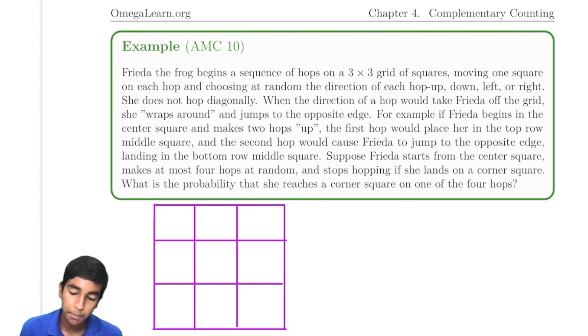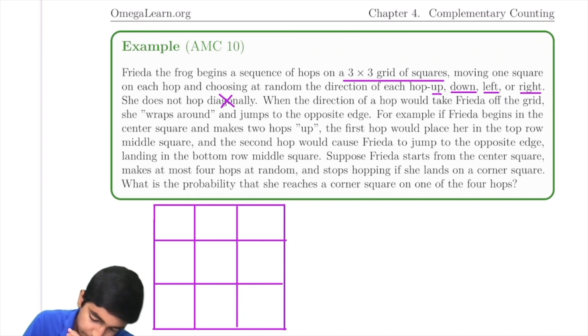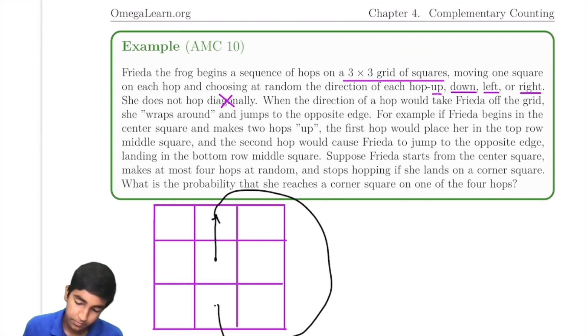We'll see an example of that in this problem. Frida the Frog begins a sequence of hops on a 3-by-3 grid of squares. Moving one square on each hop, choosing at random: up, down, left, or right. Does not hop diagonally. And when the direction of a hop would take Frida off the grid, she just wraps around and jumps to the opposite edge. So it's kind of like a circular arrangement.